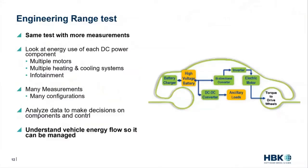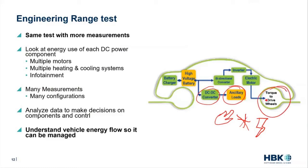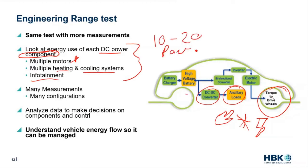Things get more complicated at the engineering level. We have DC-DC converters, ancillary loads like heating, cooling, and auxiliary systems, all those creature comforts, cooling pumps, and propulsion. We want to understand how each component uses energy — the DC power of each component. New vehicles have multiple motors: front and rear axle, four wheel motors, and in heavy trucks all kinds of motors. Heating, cooling systems, infotainment — all of these have DC measurements. It's not uncommon to see 10 to 20 different power sinks that we need to instrument, so that's 10 to 20 DC power measurements.